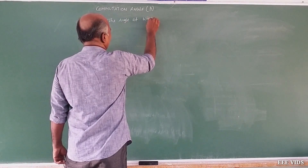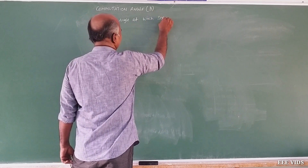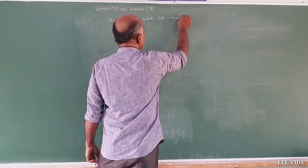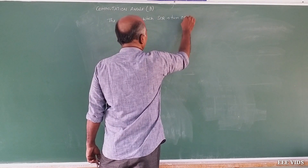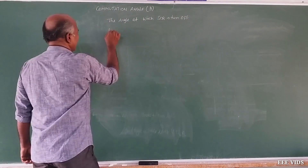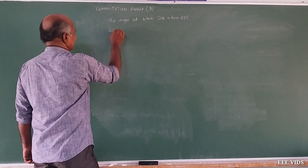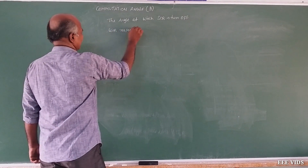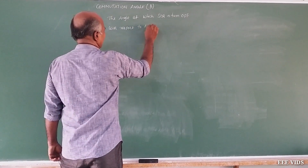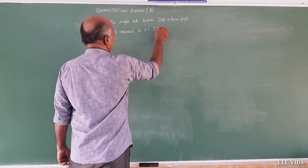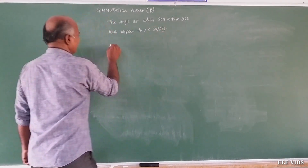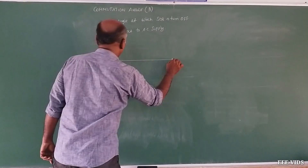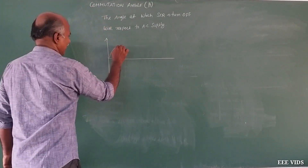The angle at which the SCR turns off with respect to the AC supply — when one AC supply is applied and the SCR goes to the off state at a certain angle — that angle is called the commutation angle, beta.